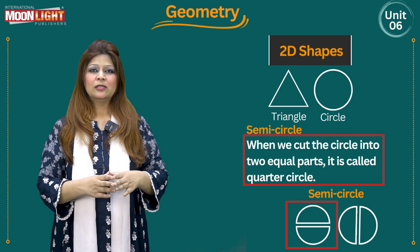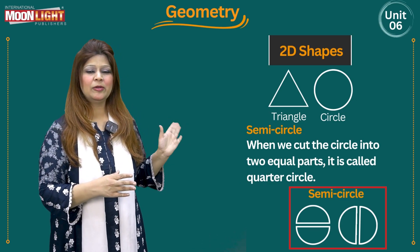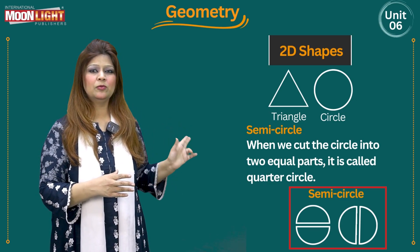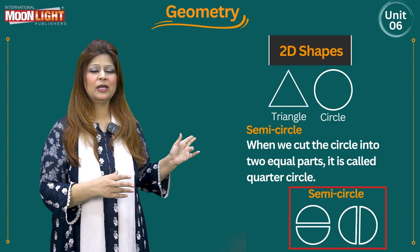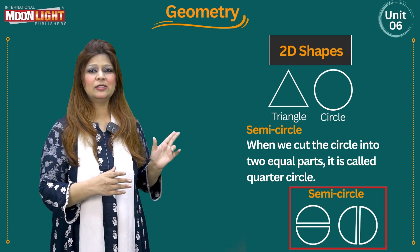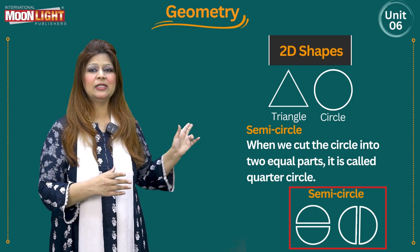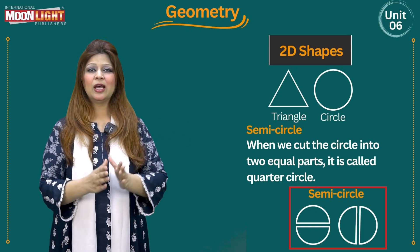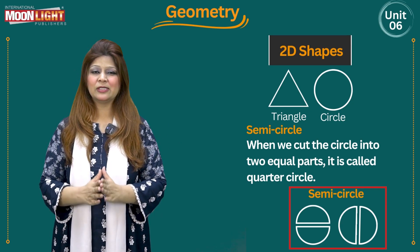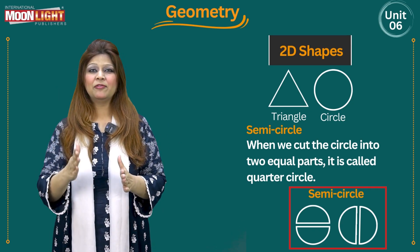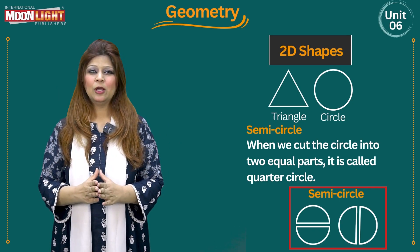You can check this figure — these two parts, or these two as well. Both are semicircles. Semicircle means half of the circle.